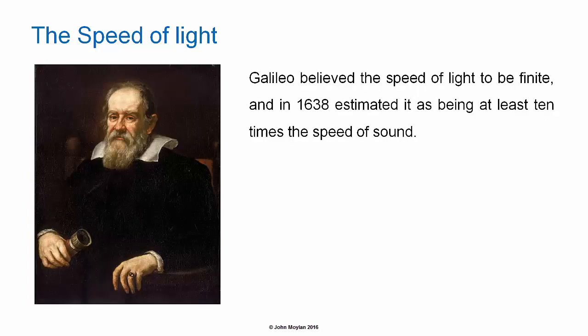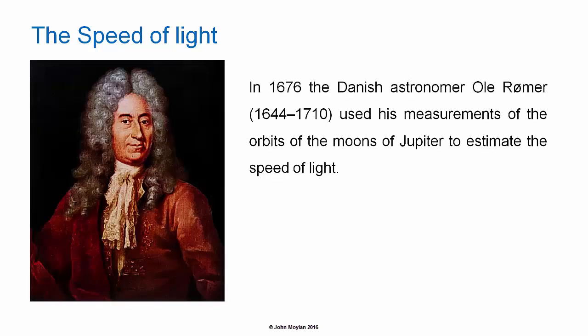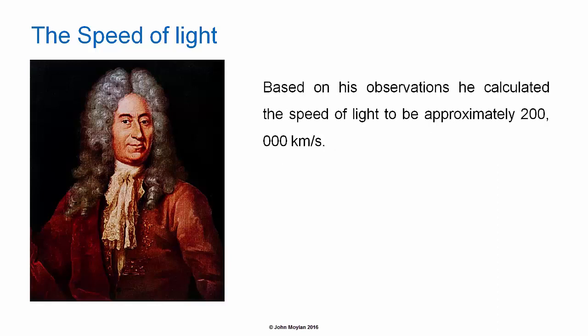Galileo believed that the speed of light was finite, and in 1638 he estimated it as being at least 10 times the speed of sound. In 1676 the Danish astronomer Ole Romer used his measurements of the orbits of the moons of Jupiter to estimate the speed of light. Based on his observations he calculated the speed of light to be approximately 200,000 km per second.